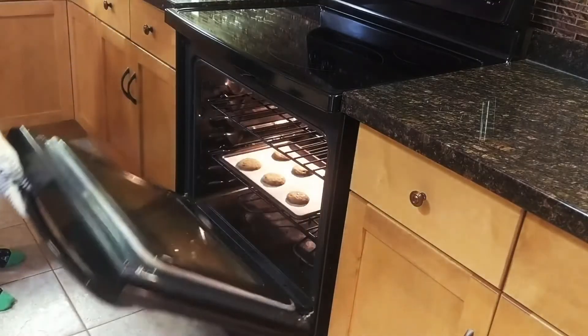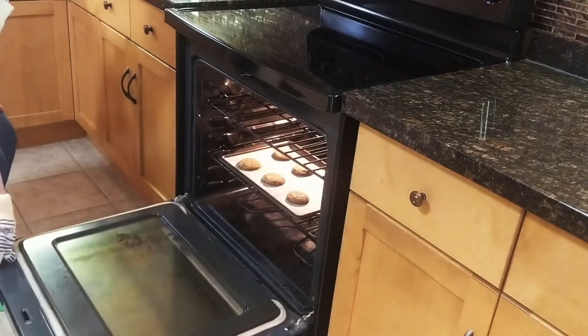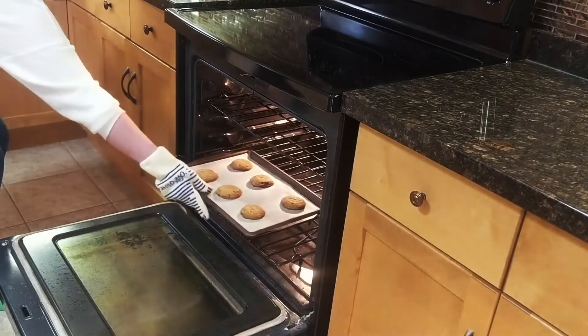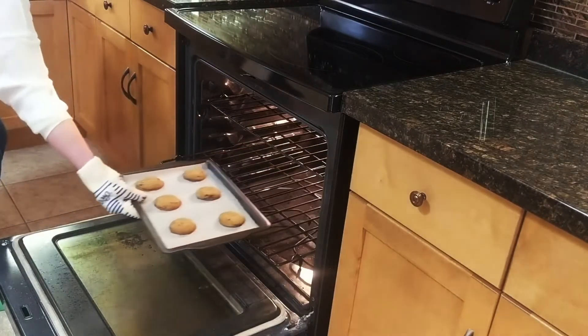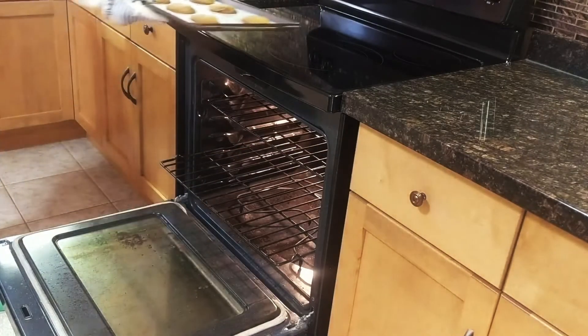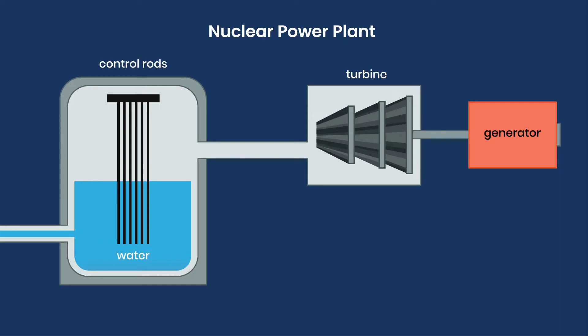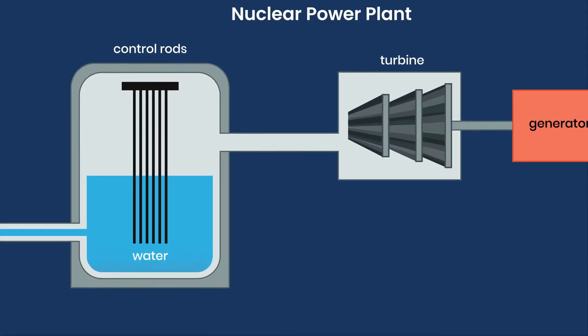Some clues or indicators of a chemical change are: production of a gas, like the smell when something bakes; a change in color, like how the dough turns brown while it bakes; or formation of a precipitate — a new solid made from chemically reacting liquids. Physical and chemical changes can both be used to make something move.